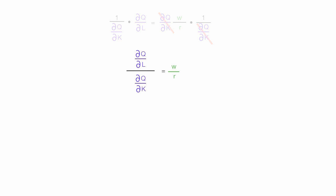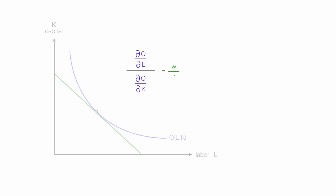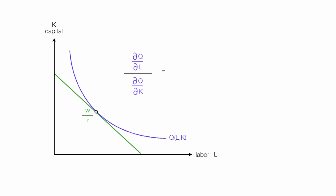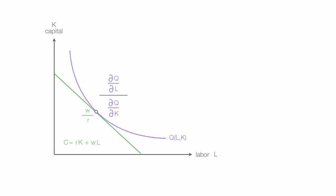Going back to the graph, it's that point where those two are equal — the green line is tangent to the blue line, or the cost line is tangent to the isoquant line. And that would be it.